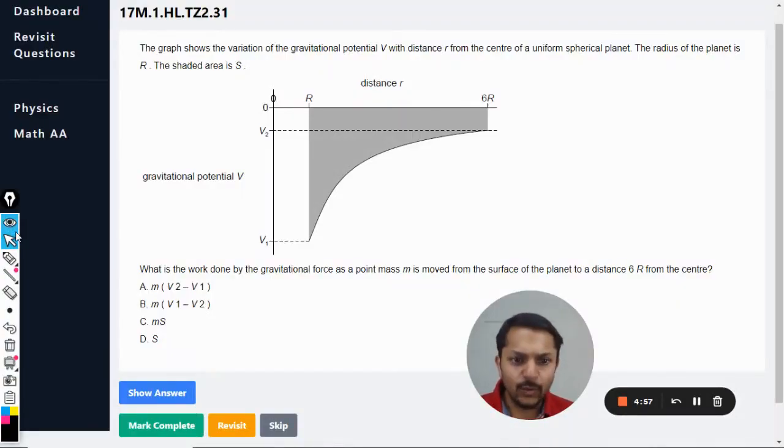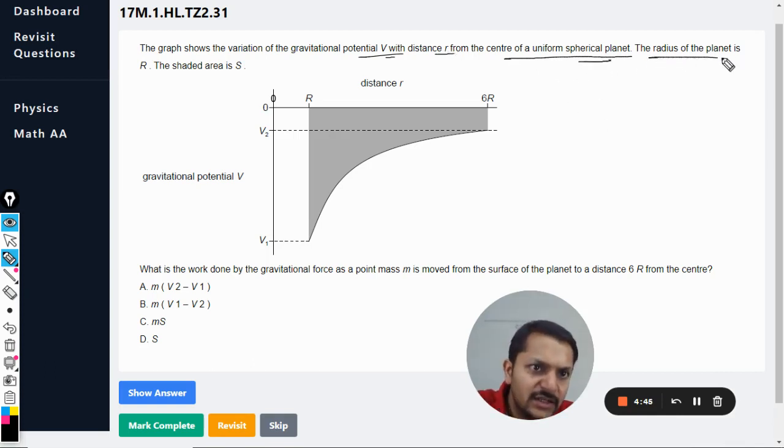Okay dear students, let us see what is there in this question. The graph shows the variation of gravitational potential V with distance R from the center of a uniform spherical planet. The radius of the planet is capital R and the shaded area is S.